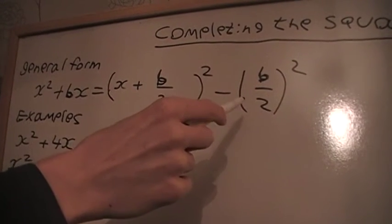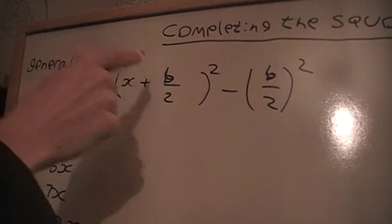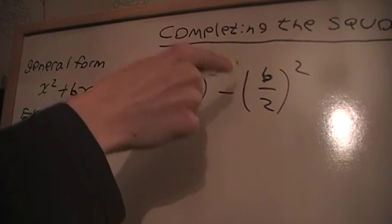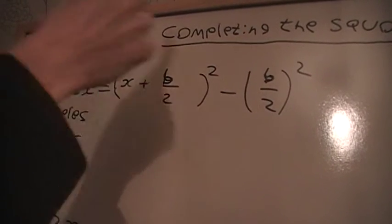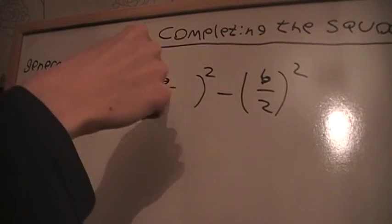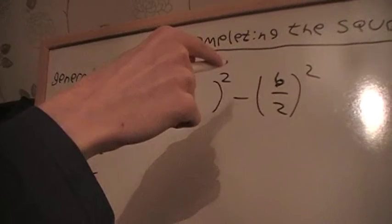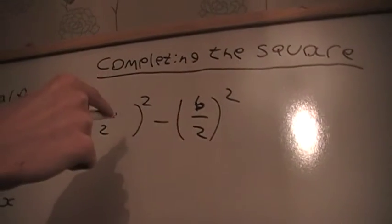This part is completing because whatever we get here we need to take that off to get this expression here back. Otherwise we'll end up with a constant term here when we multiply the b over 2 and the b over 2 together.